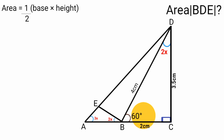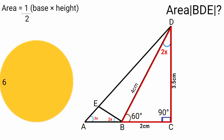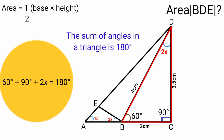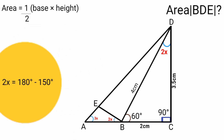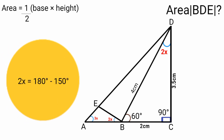Since this angle is 60 degrees, this angle is 90 degrees, and this angle is 2x, we form an equation to find x: 60 + 90 + 2x = 180 degrees, because the sum of angles in a triangle is 180 degrees. 60 plus 90 is 150, so 150 + 2x = 180. Subtracting 150 from both sides gives 2x = 30 degrees.